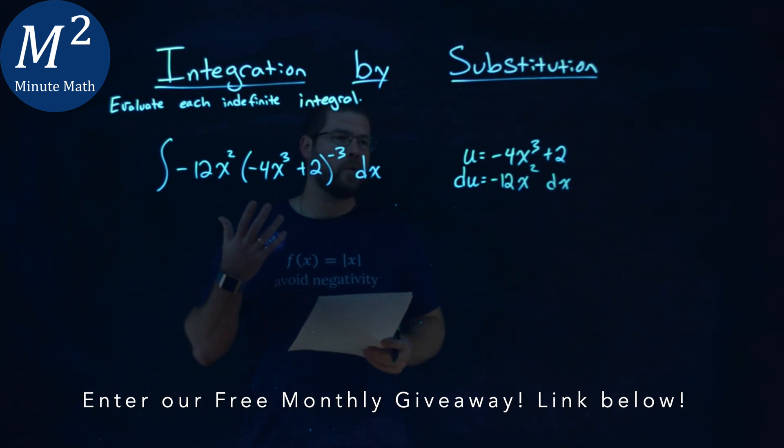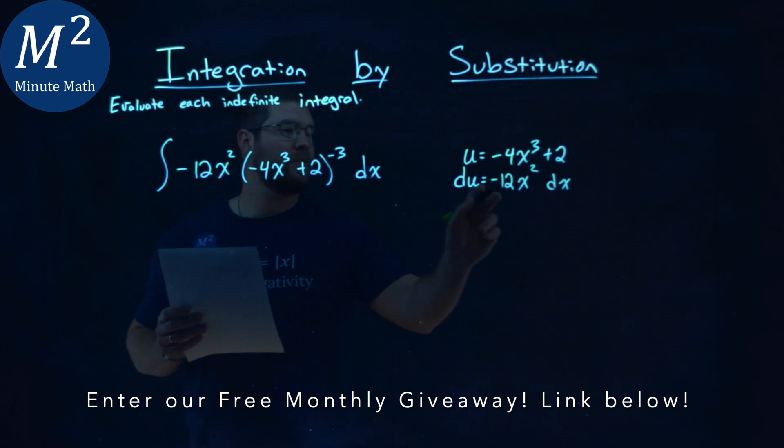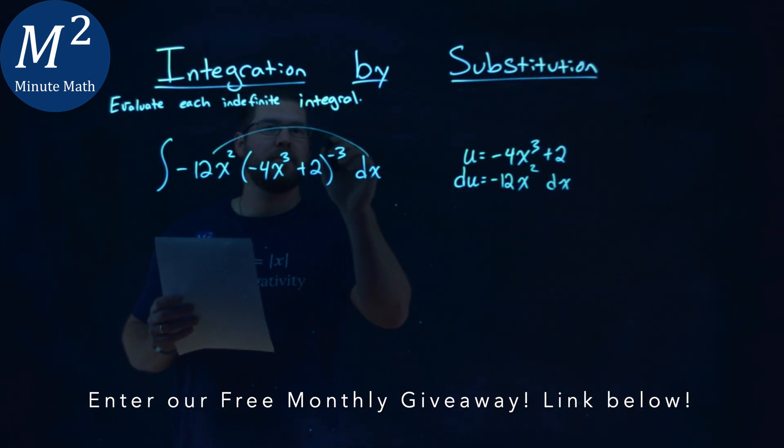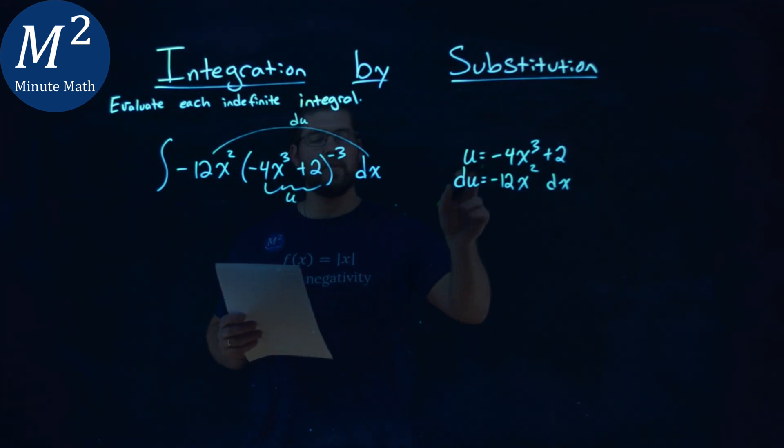And this actually works perfectly. Notice we have a negative 12x² dx which lines right up with our du, and the inside part is just the u: negative 4x³ plus 2.